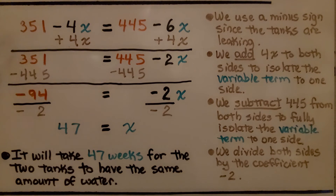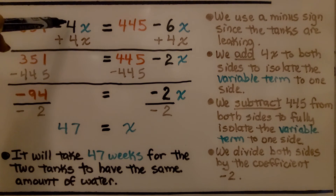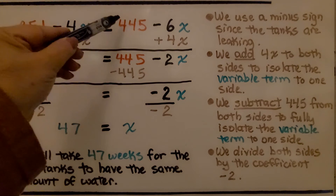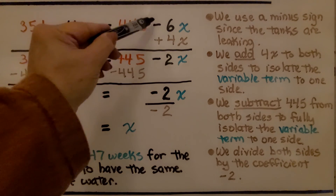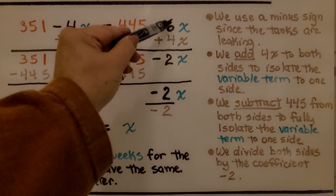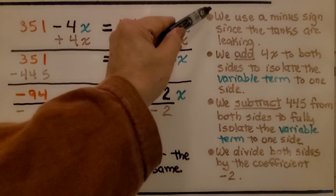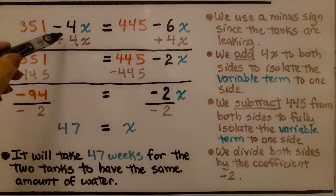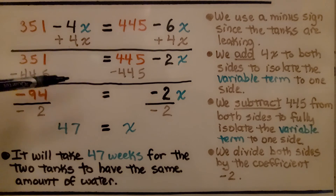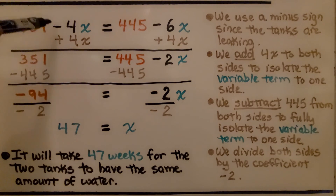Here we have our expression for the first tank: 351 minus 4x. And here's our expression for the second tank: 445 minus 6x. We use a minus sign since the tanks are leaking — they're losing quantities of water, so we have minus on each side.